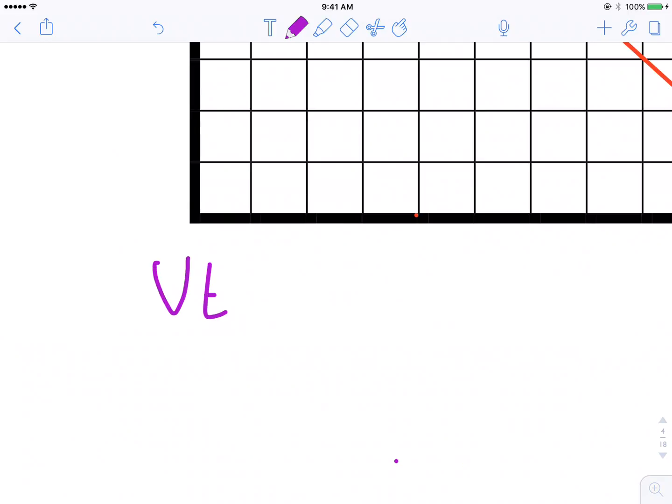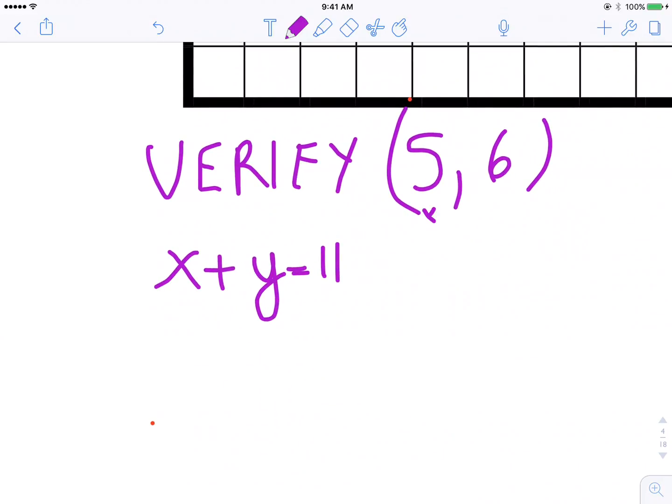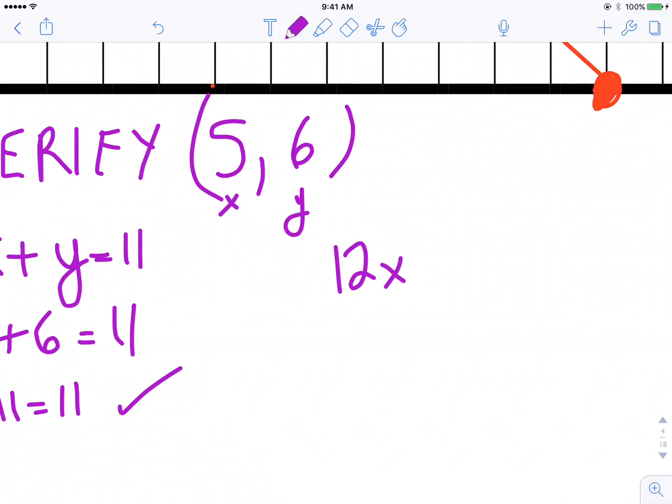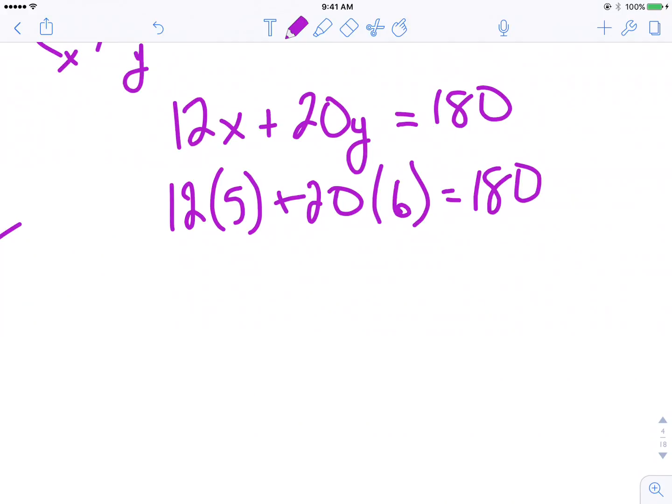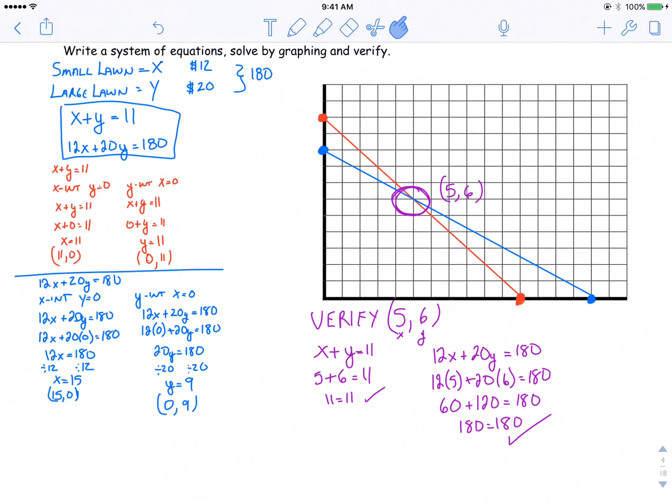Now to verify those points: five comma six. Start with my first equation, X plus Y equals 11. Substitute in my X and Y: 5 plus 6 equals 11, and 11 equals 11, so it's true. I test my second equation, 12x plus 20y equals 180. Substitute in 5 for X and 6 for Y: 60 plus 120 equals 180, and 180 equals 180, which is also true.